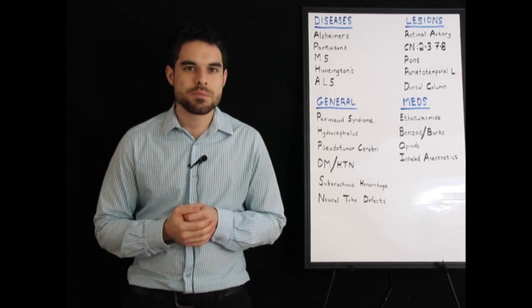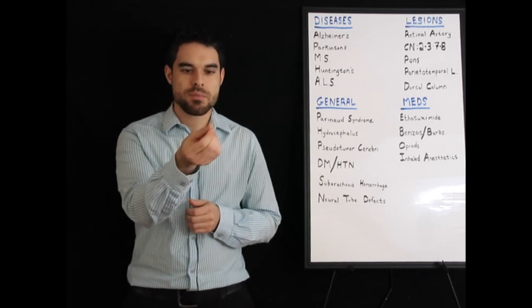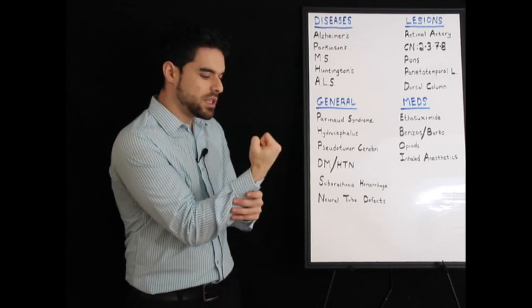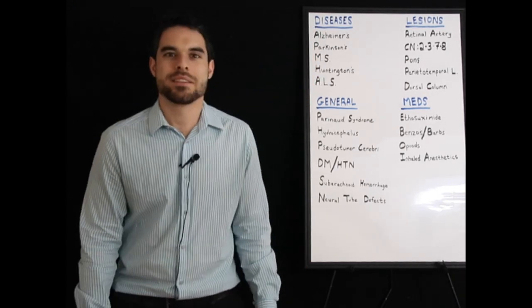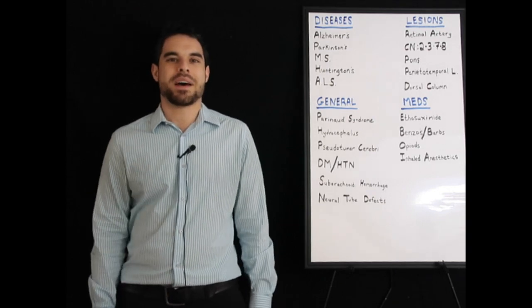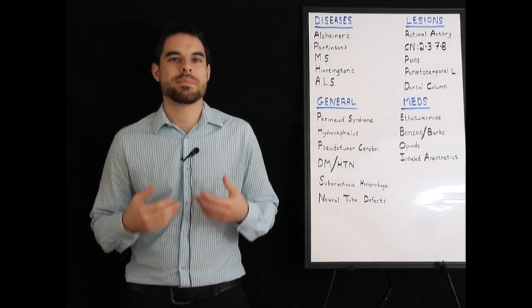Regarding Parkinson's disease, the presentation is going to be a pill-rolling tremor like this. You have cogwheel rigidity like that, and a shuffling gait, just like the penguin, as well as postural instability.